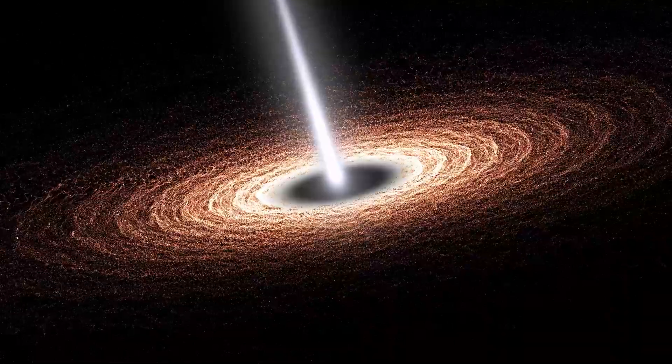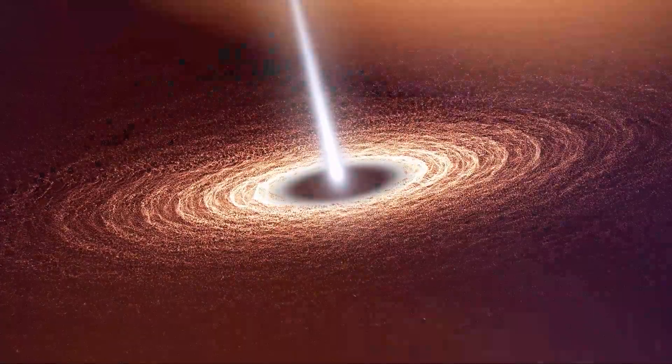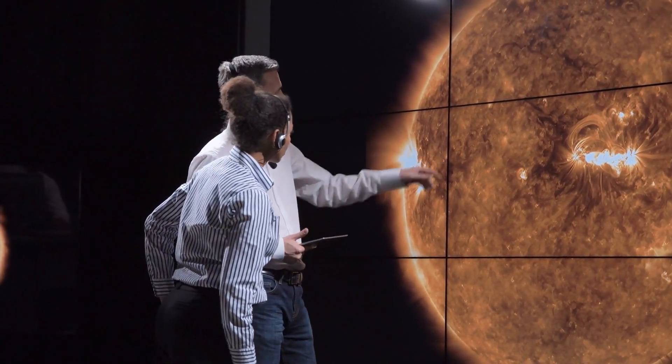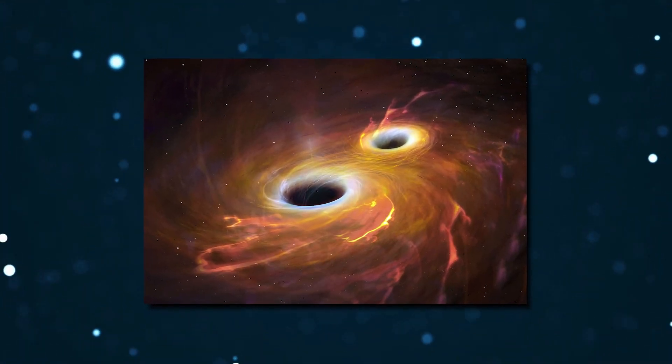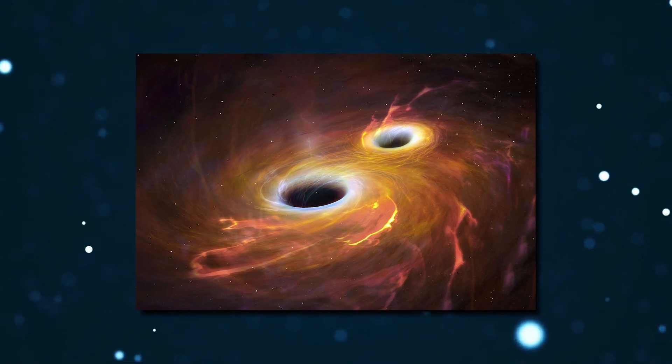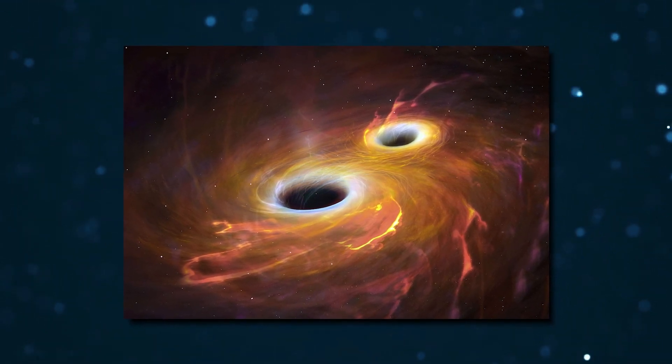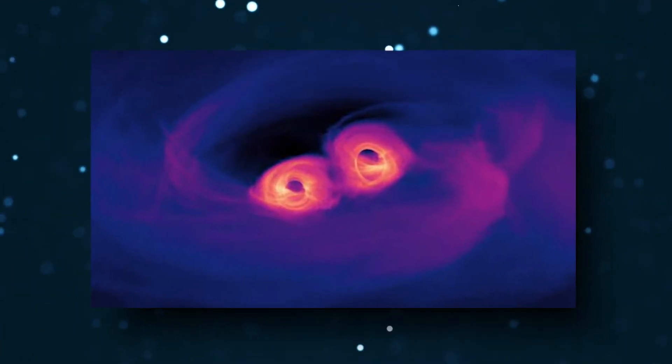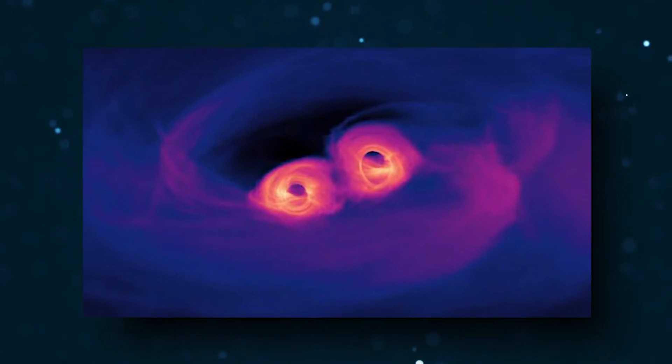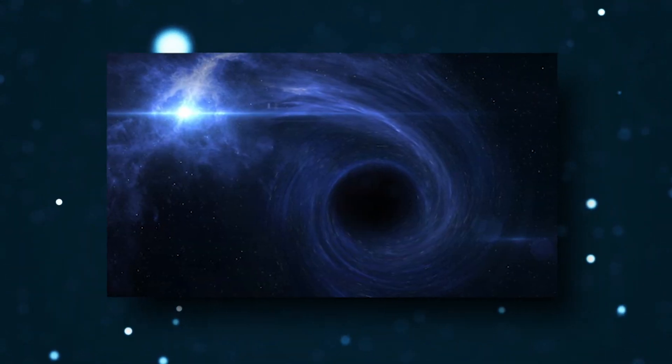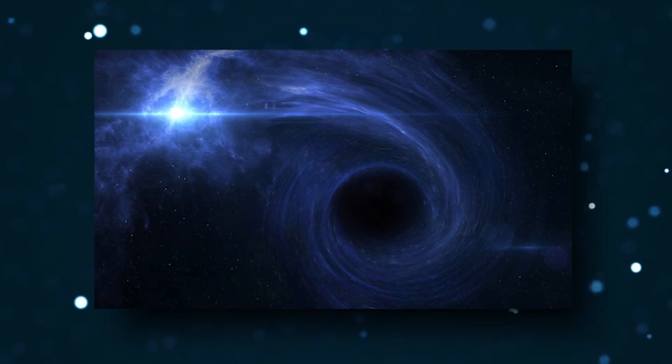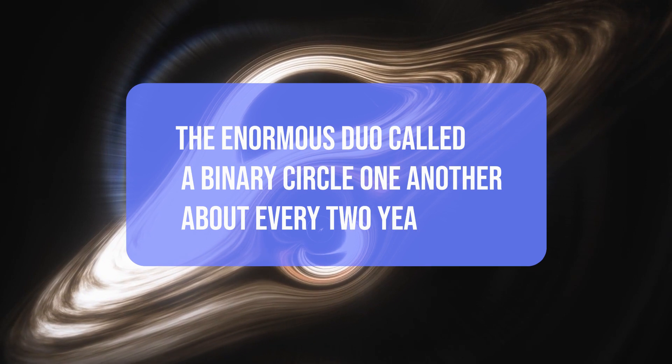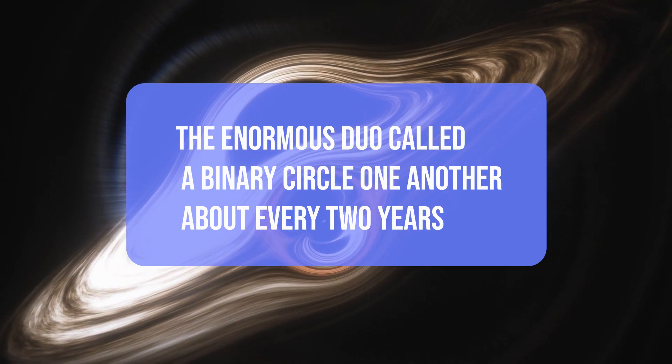Supermassive black holes, millions to billions of times the mass of our sun, lie at the heart of most galaxies, and astronomers are eager to know how these behemoths came to be. While they think most resulted from at least one merger between two smaller supermassive black holes, scientists lack the observations that could give insight, since only one pair of supermassive black holes on the way to a merger had been found. A new study may change that. Researchers observing a supermassive black hole report signs that it has a closely orbiting companion.